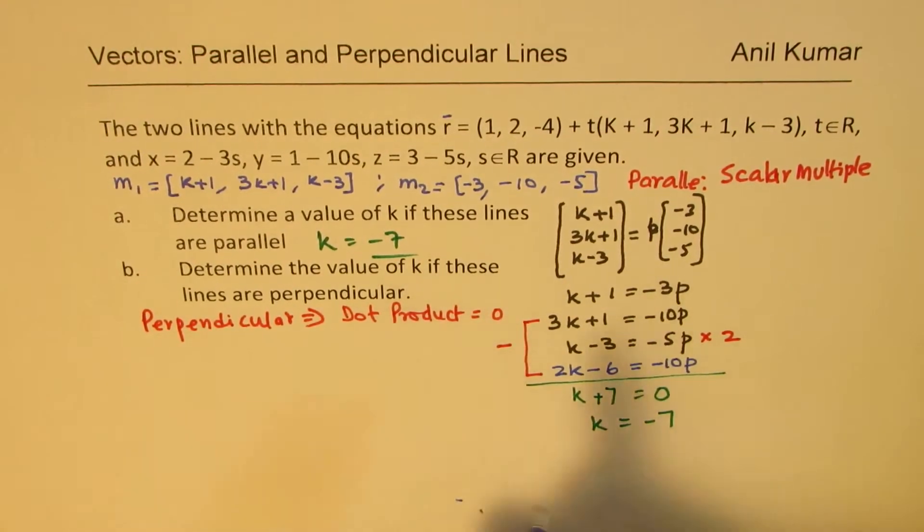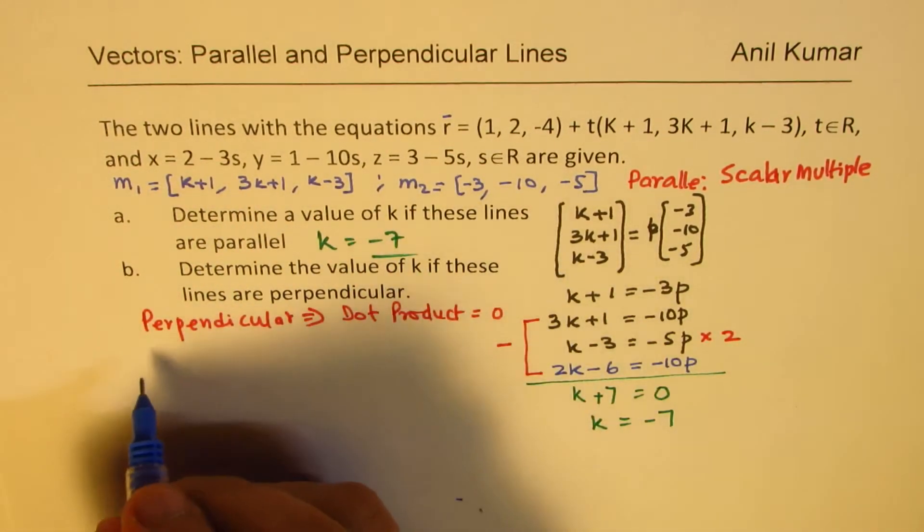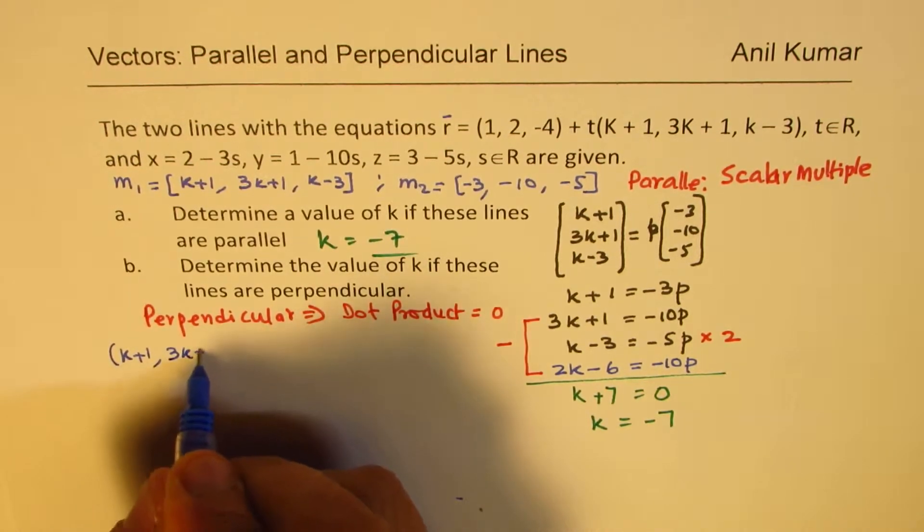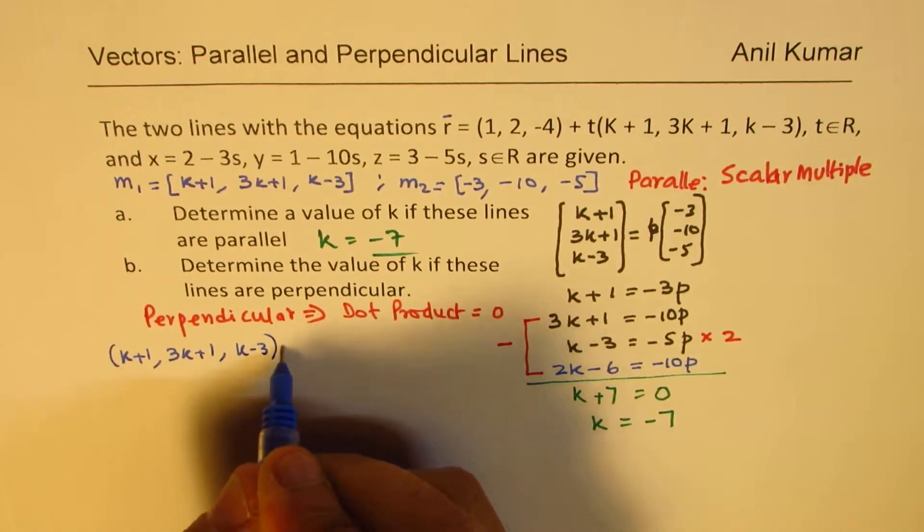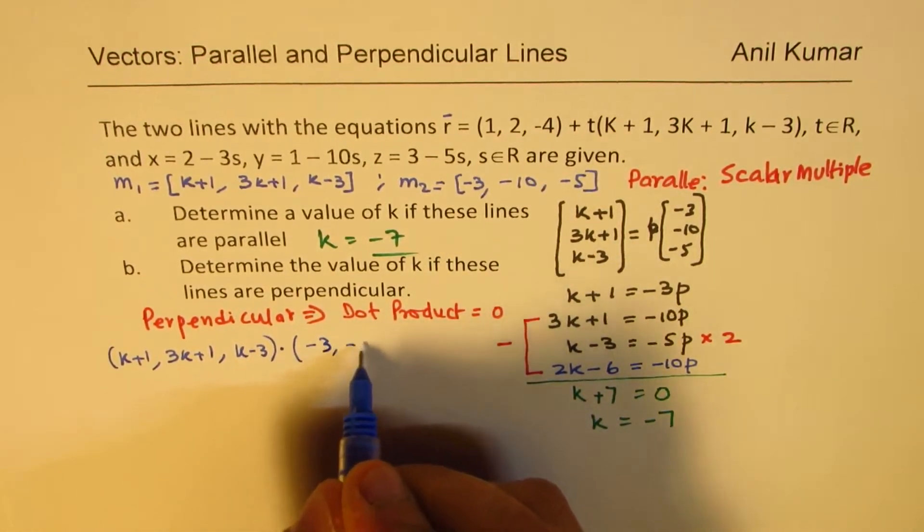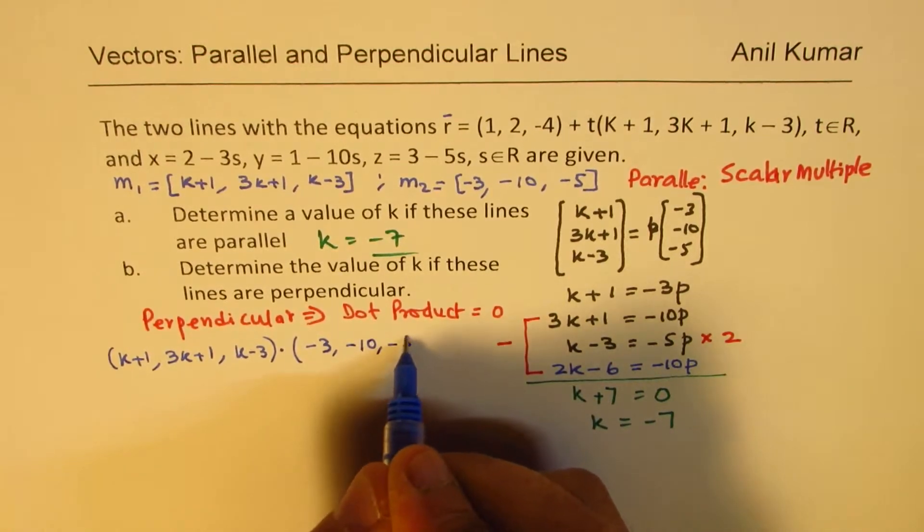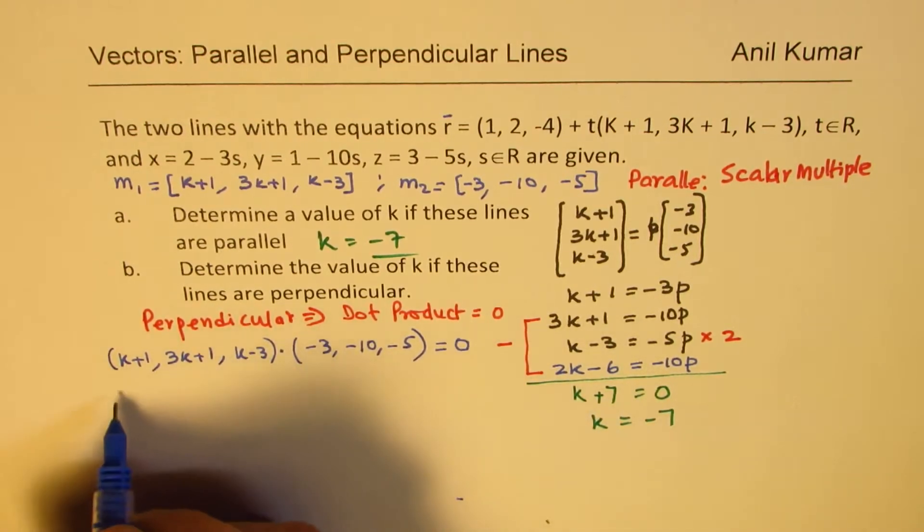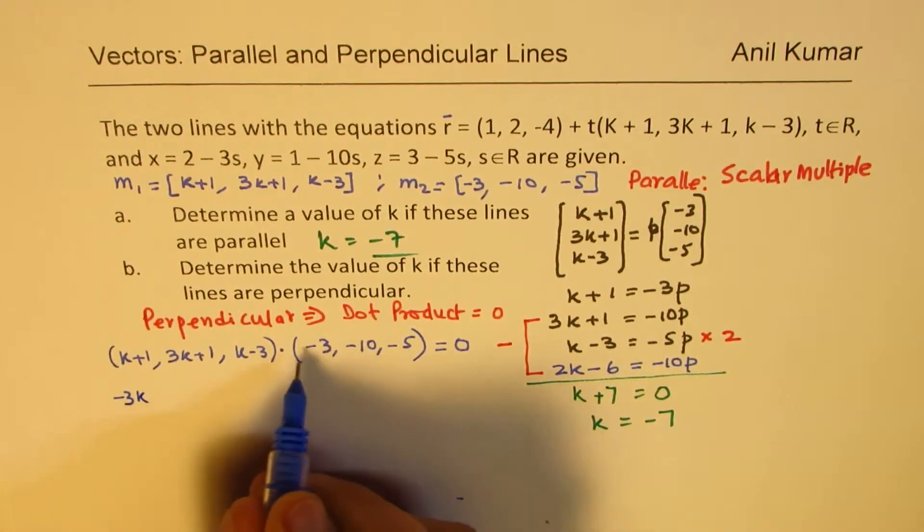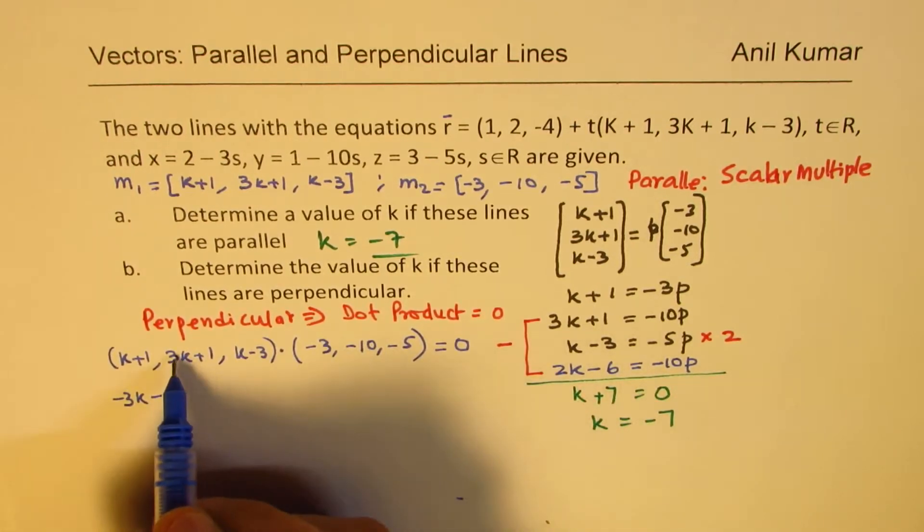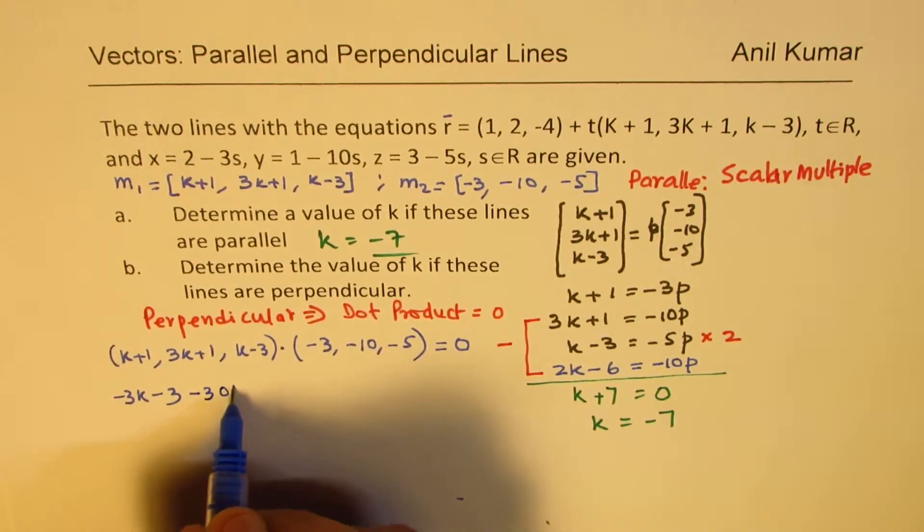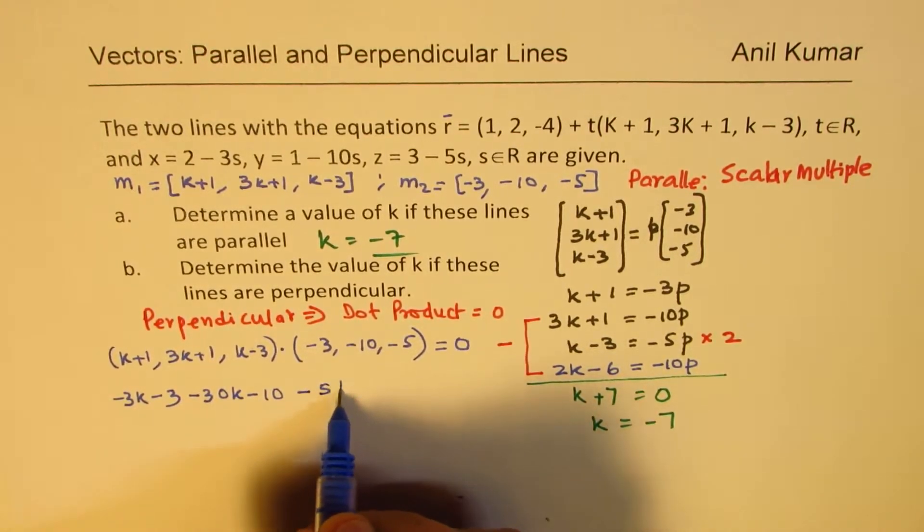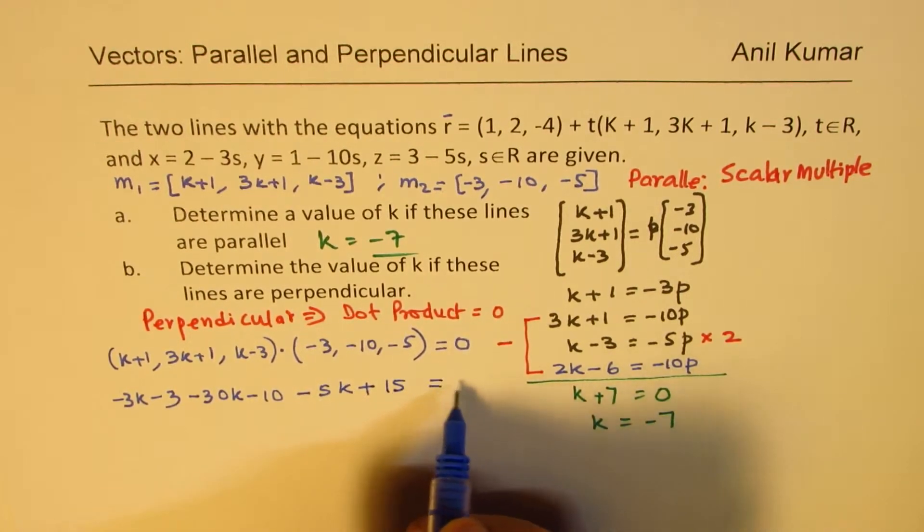So now let's find the dot product between m₁ and m₂. We have (k+1, 3k+1, k-3) · (-3, -10, -5) = 0. Let's multiply: -3 times this gives -3k-3, with -10 you get -30k-10, with -5 you get -5k+15 = 0.